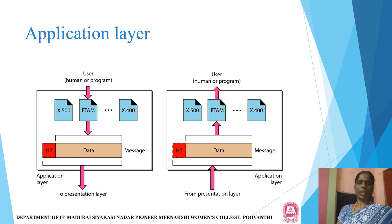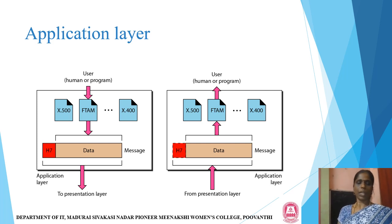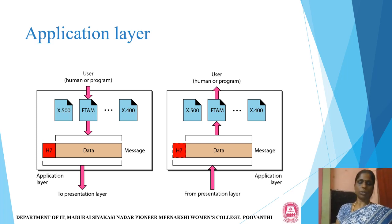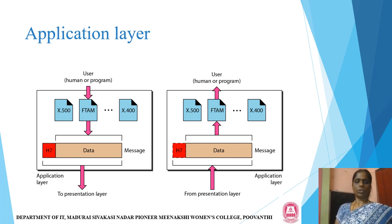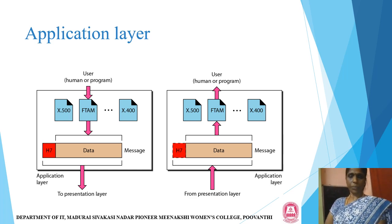The application layer has a header H7. Messages are processed as data. From the application layer, user programs are transmitted through the presentation layer, then the session layer, transport layer, network layer, data link layer, and finally the physical layer, passing data to the receiver side. The receiver receives the data in the same reverse order.